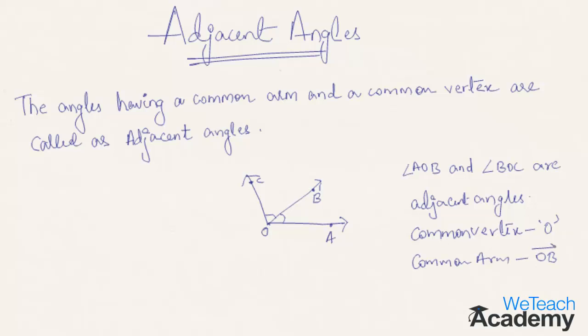Hence, the angles having a common arm and a common vertex are called adjacent angles.